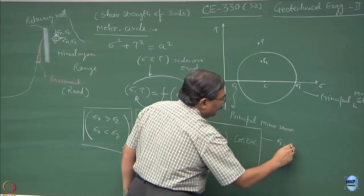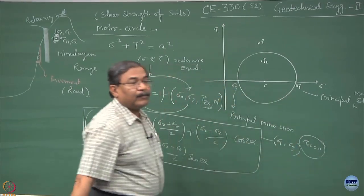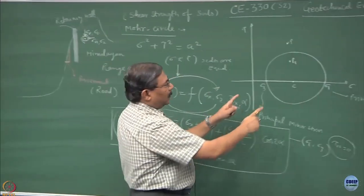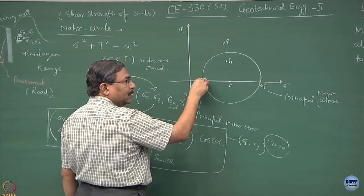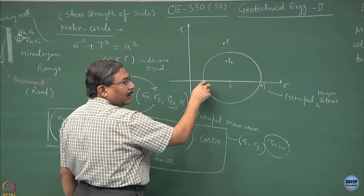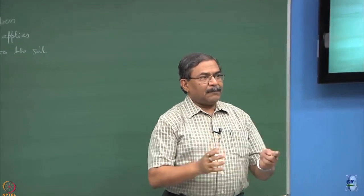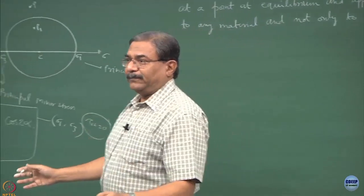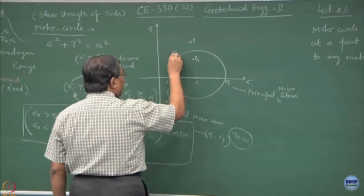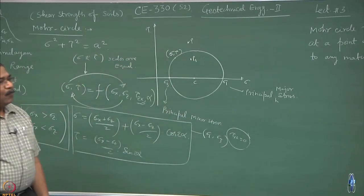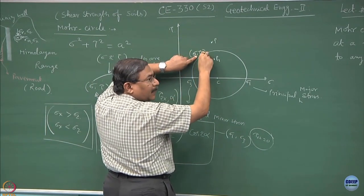When dealing with sigma 1 and sigma 3, your tau xz vanishes. Why? Because sigma 1 and sigma 3 always act on planes where the shear stress is 0 — that is the reason we call them principal major and minor stresses. These are the planes on which shear will never act, or it will be 0. But if I consider a point and define a sigma-tau state, this is a state of stress acting on some plane. The moment this becomes critical, failure takes place.